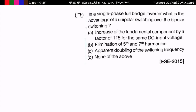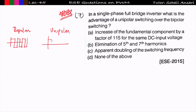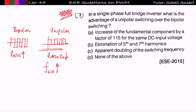The seventh problem: in a single-phase full bridge inverter, what is the advantage of unipolar switching over bipolar switching? Bipolar has more voltage fluctuation, leading to higher losses in the switches, which limits switching frequency. Unipolar has less voltage fluctuation and lower losses, allowing a much higher switching frequency.